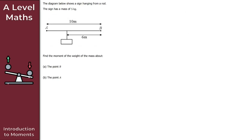For question two, the diagram shows a sign hanging from a rod. The sign has a mass of 5 kilograms, so the downward force is 5g newtons. We need to find the moment of the weight about two given points: part a is about point B, and part b is about point A.